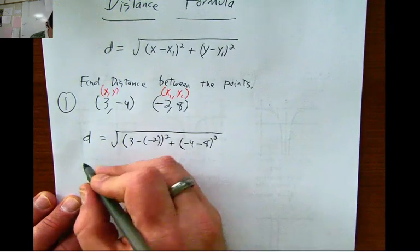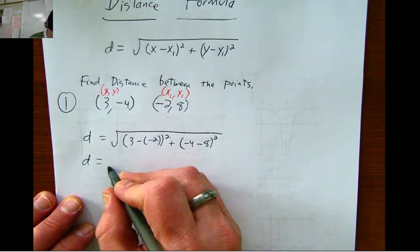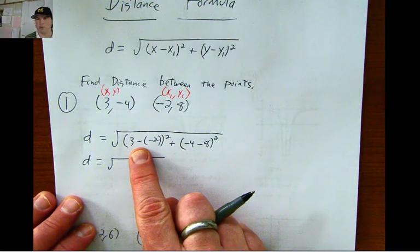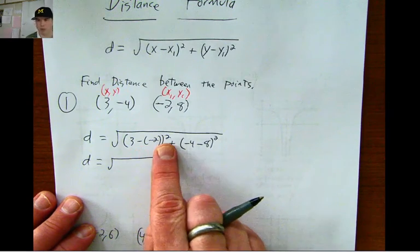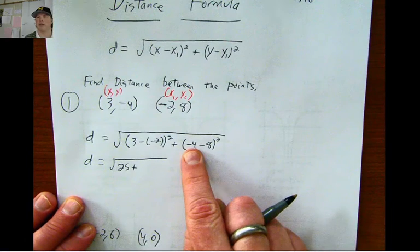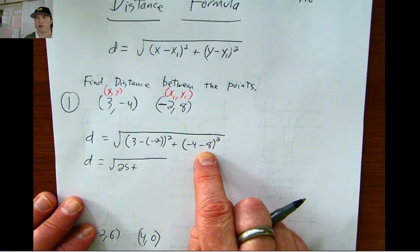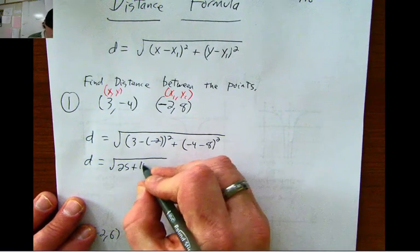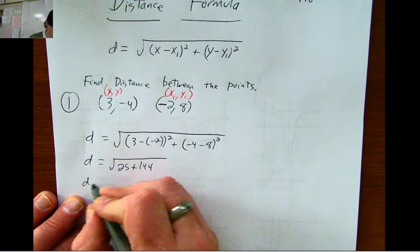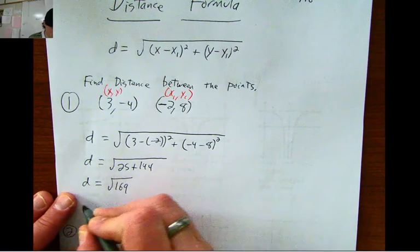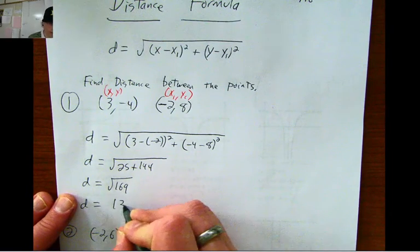And then you do some math magic. This becomes 3 plus 2, that becomes 5, 5 squared, 25, plus negative 4 minus 8, negative 12, negative 12 squared, 144. These add up to square root 169, and the square root of 169 is 13.